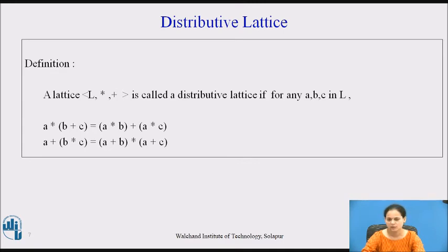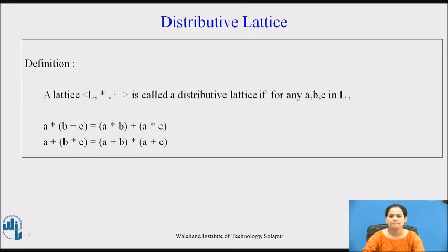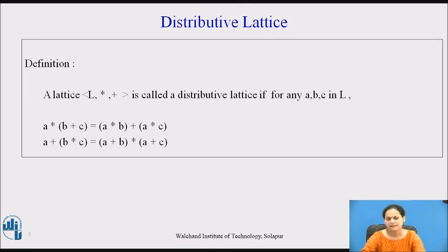A lattice L with two binary operations star and plus is called a distributive lattice if and only if for any a, b, c in L: a star (b plus c) equals (a star b) plus (a star c), or a plus (b star c) equals (a plus b) star (a plus c). What we have applied is the distributive law for the two binary operations star and plus, which is why the lattice is called a distributive lattice.